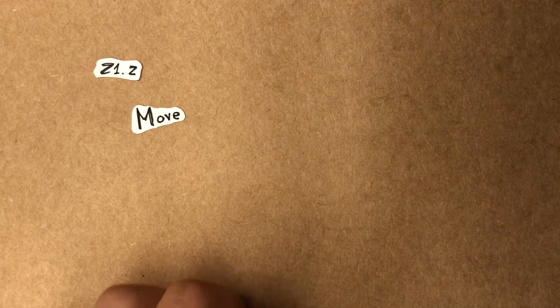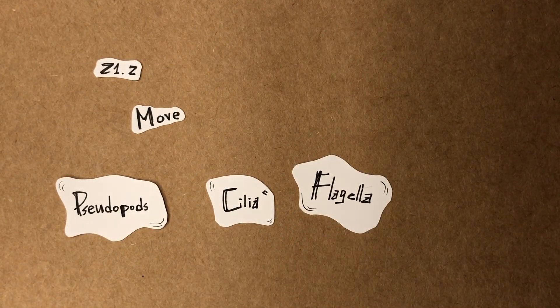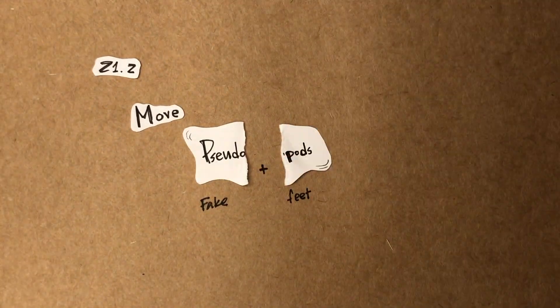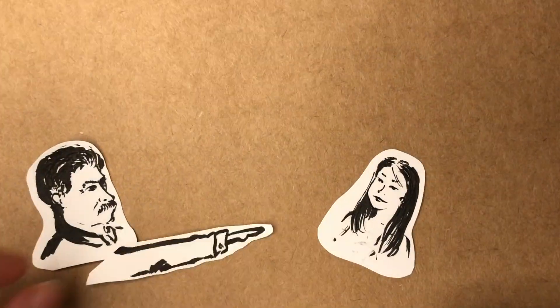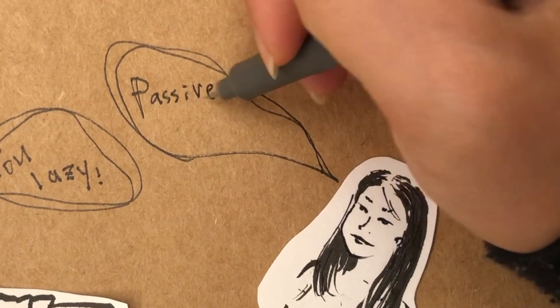Section 21.2 talks about how protists move and reproduce. There are three structures that help these little things move: pseudopod, cilia, and flagella. Pseudopod means fake and positive like feet, so basically they change their shape to move around, which looks as if they have feet. Cilia is the furry thing that helps protists swim. Flagella is a long tail that goes from side to side to push protists forward. Aside from these three ways, some protists rely on passive movement — they just sit there and wait for water or other organisms to carry them around.